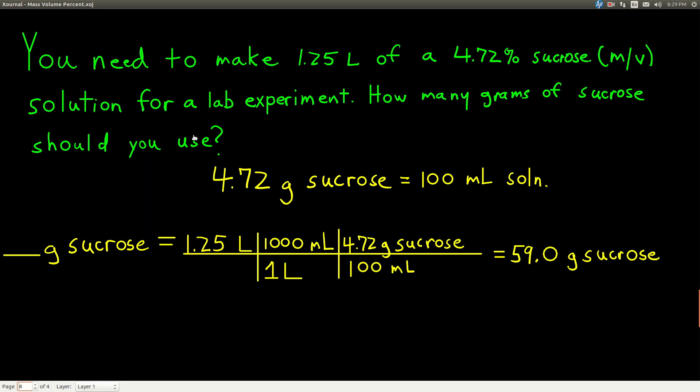Well, it's a dimensional analysis problem and what we want to know is grams of sucrose, so that's the unit of our answer. Within the problem, we have a conversion factor and that conversion factor is given as the mass volume percent sucrose. So what we say is for this problem, 4.72 grams of sucrose is equal to 100 milliliters of solution. That lets us convert between milliliters of solution and grams of sucrose.